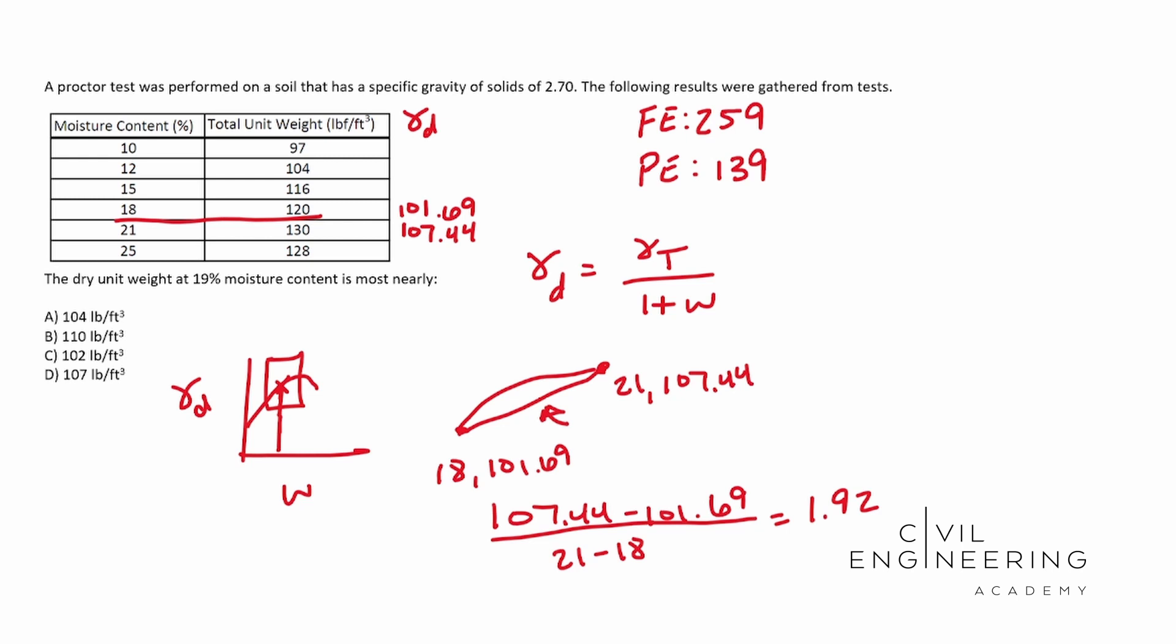So if we're wanting to solve for 19, what we need to do is use our initial point, our initial Y, which is this 101.69. Remember we didn't start from 10. We started at 18. So that 18 is our initial point. We need to multiply 1.92 times one because we're moving one percentage up to 19 right here. And then we need to add that 101.69.